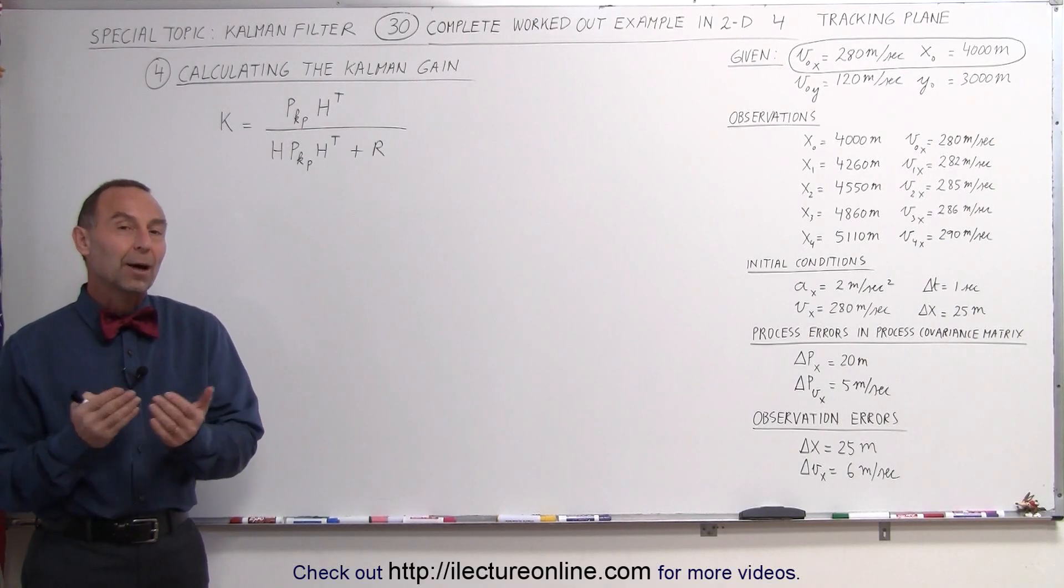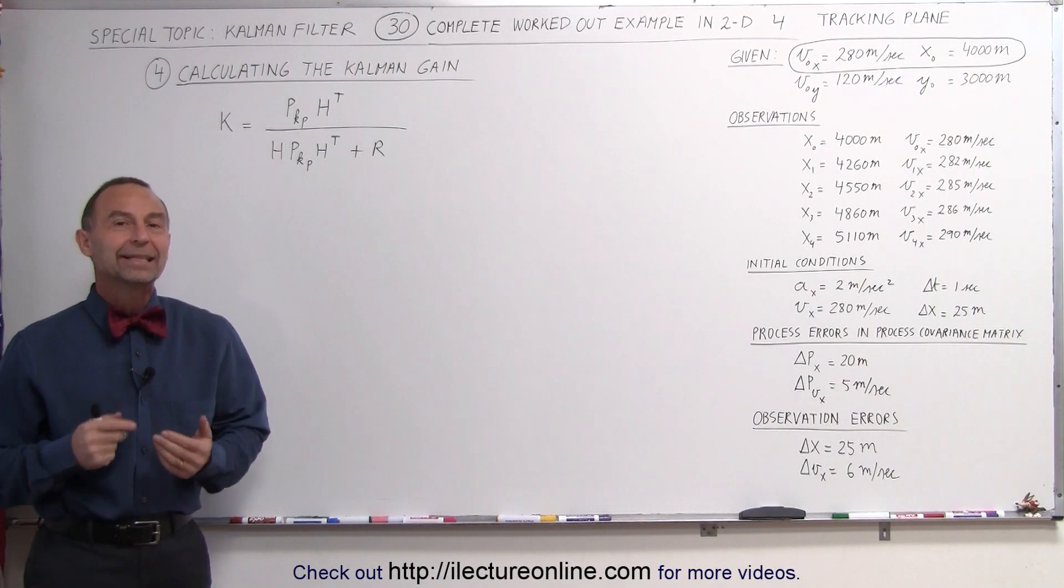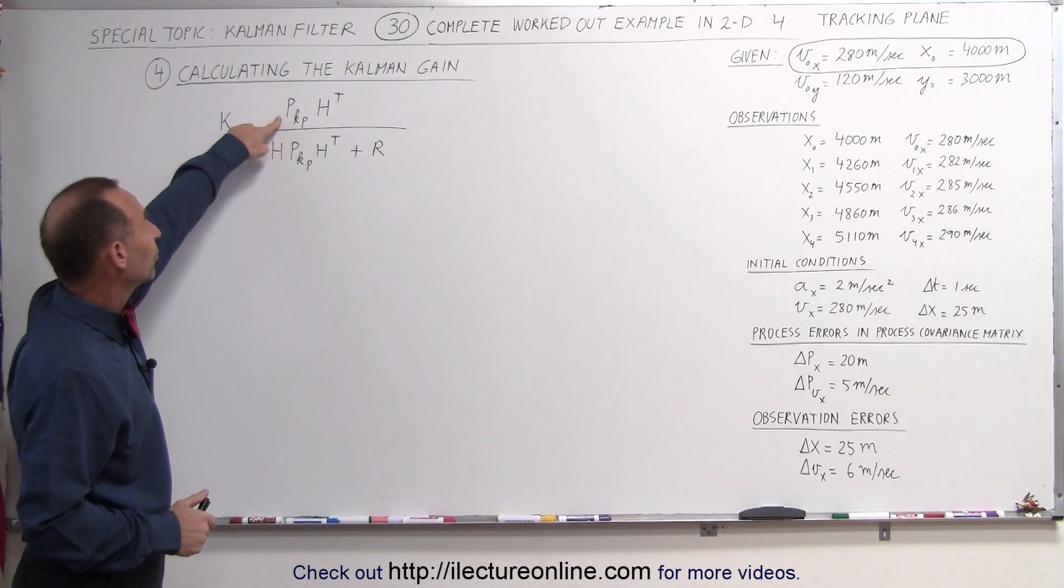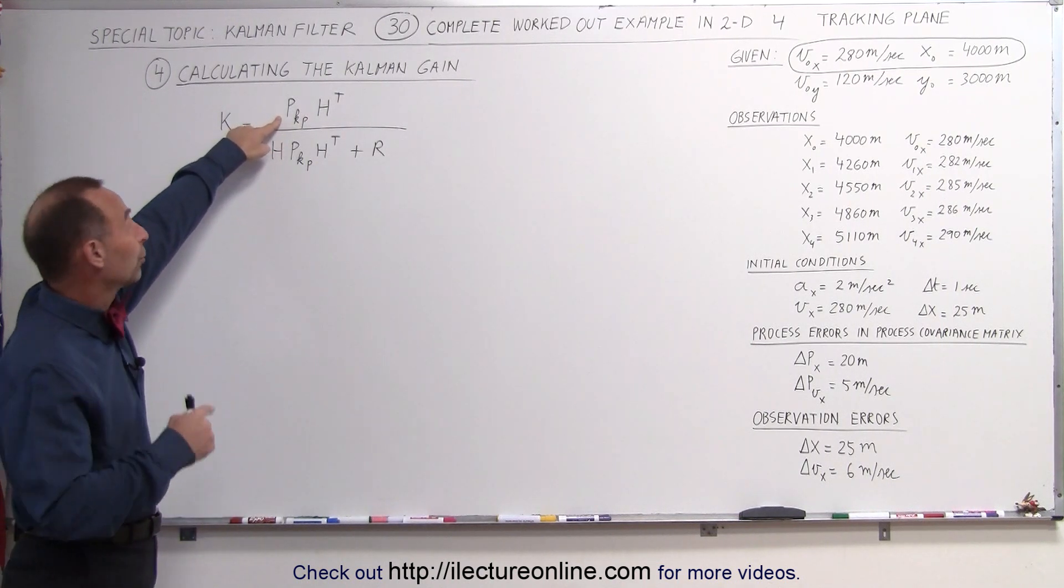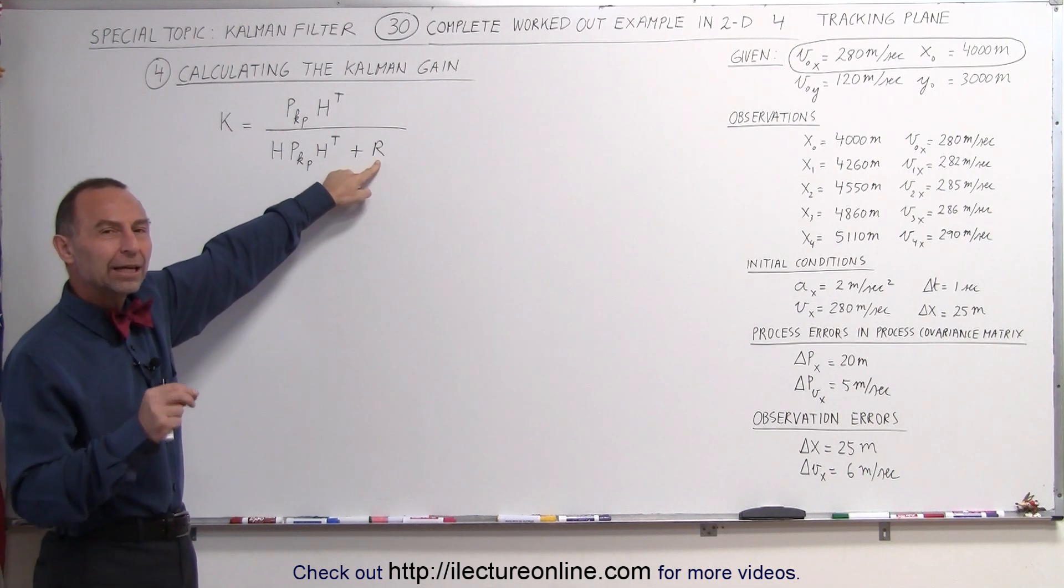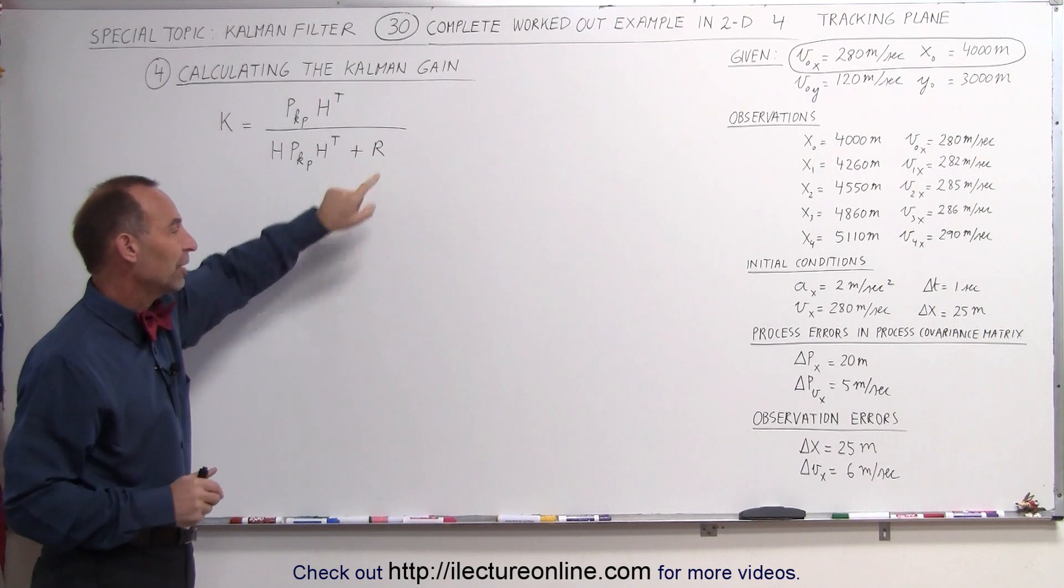Welcome to ElectronLine. Now it's time to find the Kalman gain. To find the Kalman gain, we have to use the process covariance matrix, the updated one or the predicted one, and we have to use the error or the uncertainty in the observation.